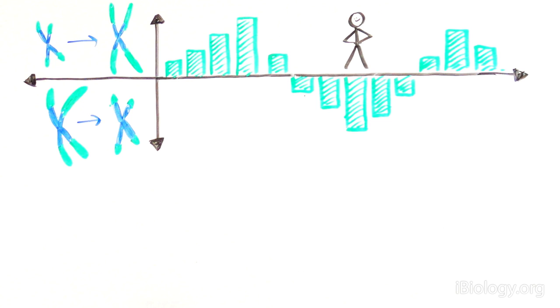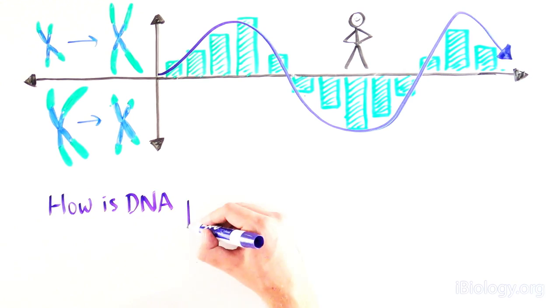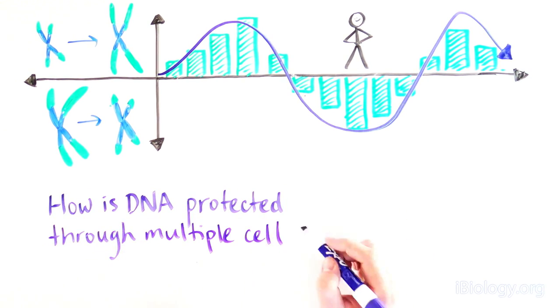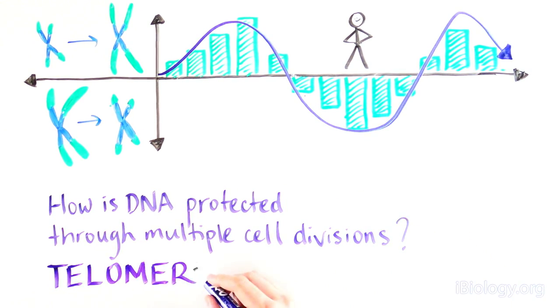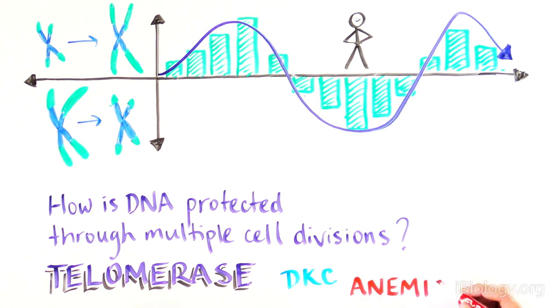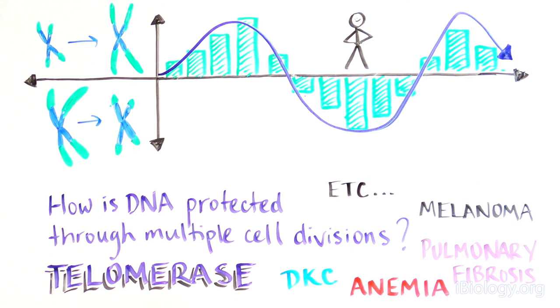It's captivating to learn that we live our lives between states of telomere extension and shortening, and this has important implications for our biology. It's fascinating to see the basic science question of how DNA is protected through multiple cell divisions lead to the discovery of an enzyme that is now implicated in a growing number of diseases and whose extremely complex biology we're still trying to unravel 30 years later.